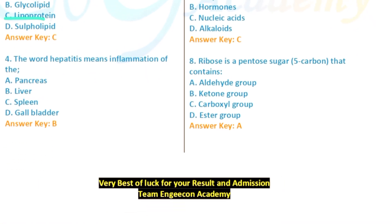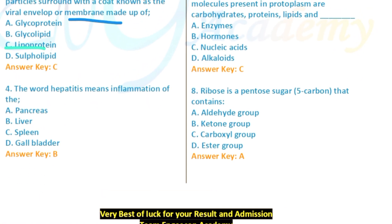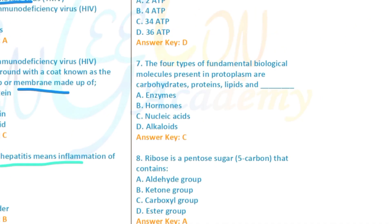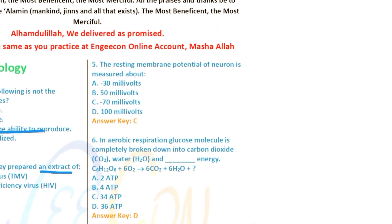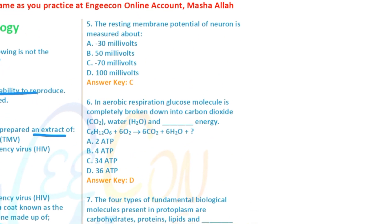Question 7: Hepatitis means inflammation — hepatitis means inflammation of the liver. Option B is ticked. Question 8: The resting membrane potential of a neuron is measured at approximately negative 70 millivolts.